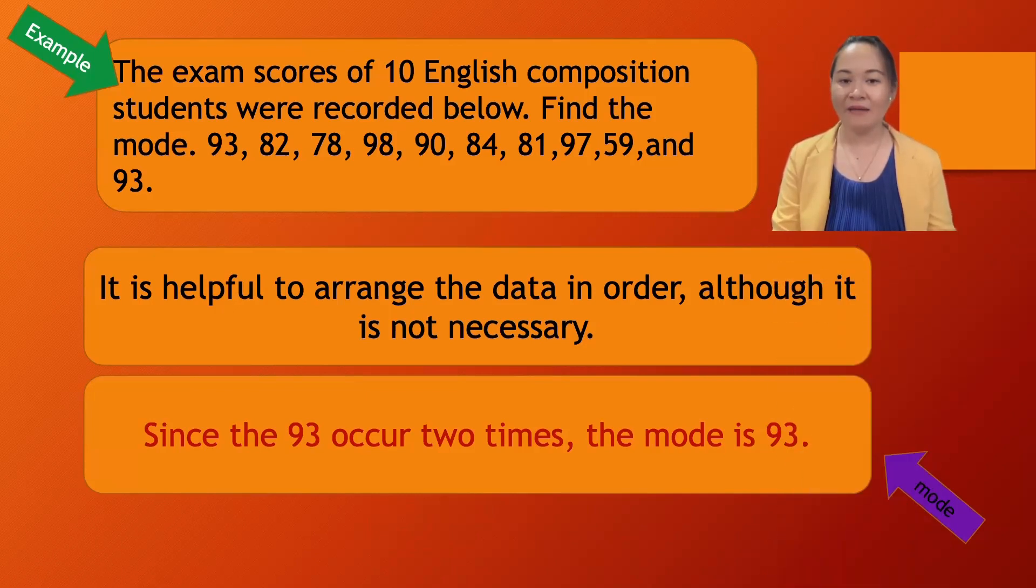It is helpful to arrange the data in order, although it's not necessary. Since 93 occurs two times, the mode is 93, as that is the most frequent data.